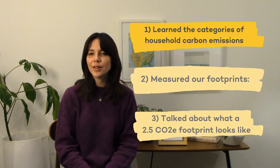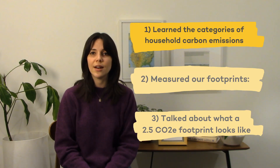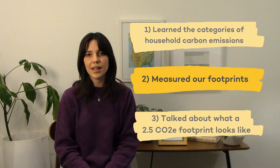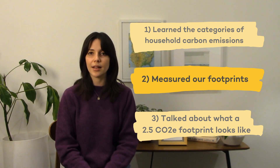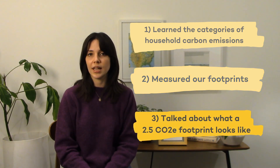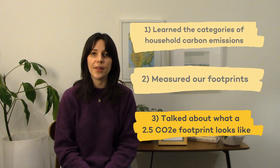Dr. Elizabeth Sawin puts it like this: in our communities, the actions needed to prevent and prepare for climate change can give us more of the things we already want and less of the things that are hurting us. Adjusting to a low-carbon lifestyle is an amazing opportunity to improve our communities for everybody. So let's recap: we learned the categories that contribute to household carbon emissions, we measured our own footprints to see where we have power and where we need to claim power back, and we talked about what a 2.5 CO2e footprint looks like and what Canada needs to change to get there.